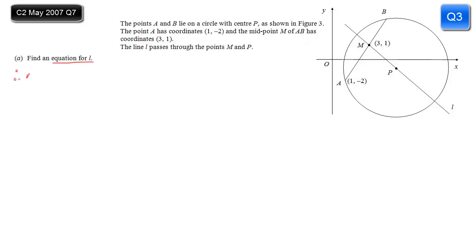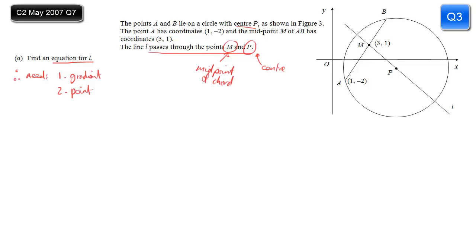We need to find an equation for L. For a straight line we need the gradient and a point. L passes through M and P, where P is the centre of the circle and M is the midpoint of chord AB. By the circle theorem, a radius bisects a chord at 90 degrees, so L is perpendicular to AB. That means I need the gradient of AB first so I can find the gradient of L.